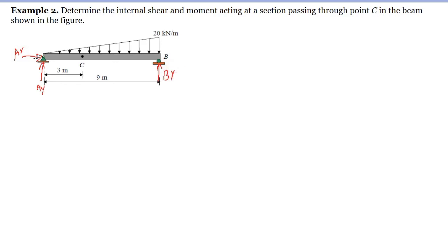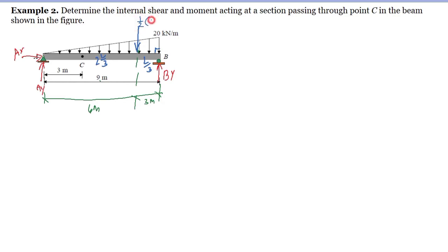For the resultant of the load, we take the area of the triangle, and that resultant acts at the centroid. The centroid of the triangle is found at one-third from the right angle and two-thirds from the other end. So the distance is one-third of L — that is 3 meters — and two-thirds, that is 6 meters. Computing the resultant: one-half times base 9 times height 20 gives us 90 kilonewtons.